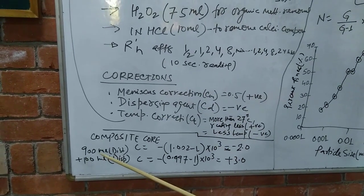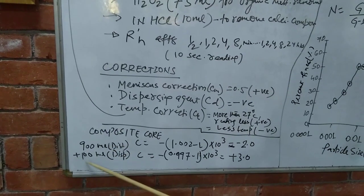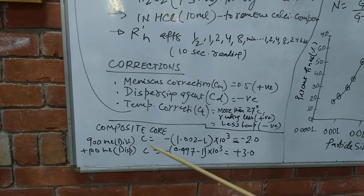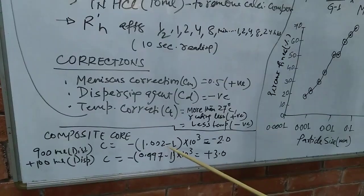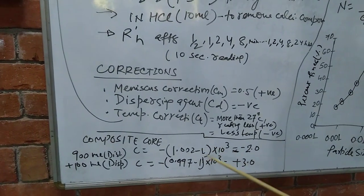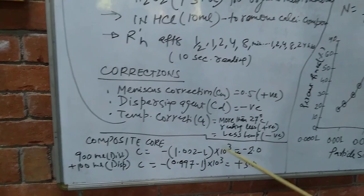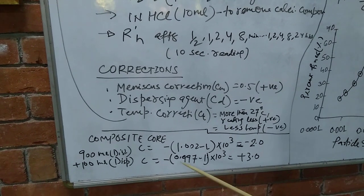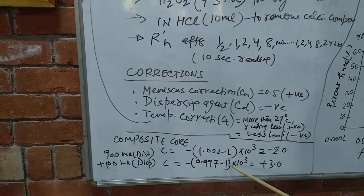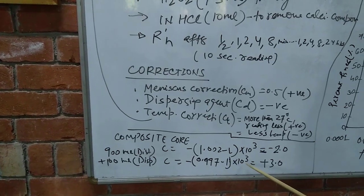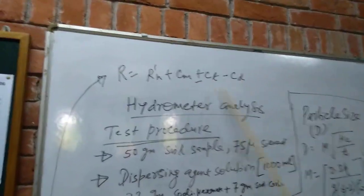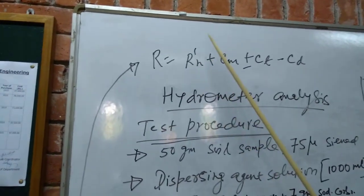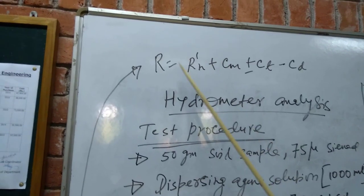How we can find out the composite corrections? For this, we can use the measuring cylinder with 1000 ml distilled water and add the dispersing agent solution. Suppose the reading is coming in this cylinder is 1.002. In that case, we shall subtract minus 1 because the specific gravity of water is 1, and multiply by 1000. The value will be minus 2. Suppose the hydrometer reading is 0.997, subtract by minus 1 and multiply by 1000, this will become plus 3. This is the formula we have to use to calculate the composite corrections. Once you calculate the composite correction, and hydrometer reading you are going to take at various time intervals, the actual reading will be calculated.